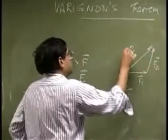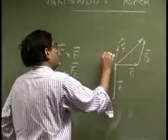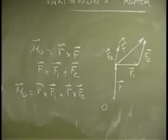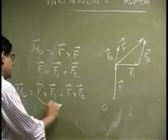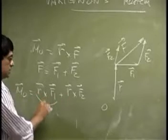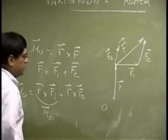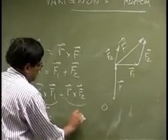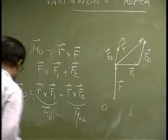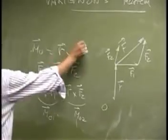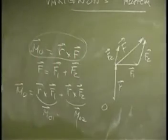Now this one could be brought here as F2. So what you have here now - this one is the moment of the first component about the same point, and this one here is the moment of the second component about the same point.